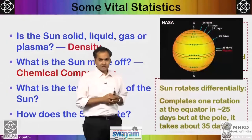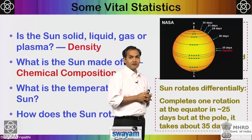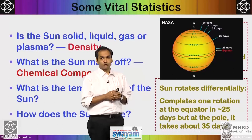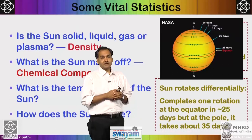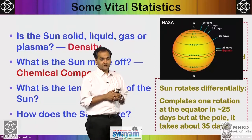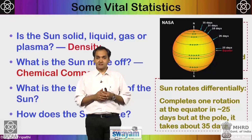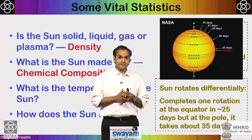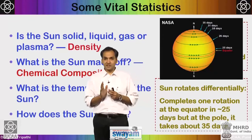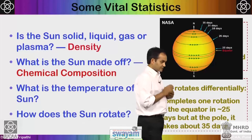Does the sun rotate? Yes — differentially. At the equator it rotates in about 25 days, faster than at the poles where it takes about 35 days. This differential rotation has strong implications for producing the solar magnetic field, which will be discussed in the third lecture. The rotation axis of the sun is tilted about 7 degrees from the vertical.